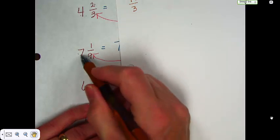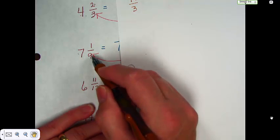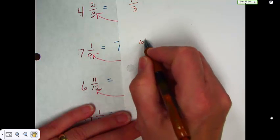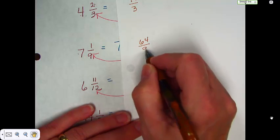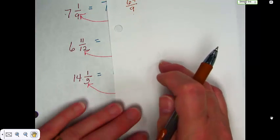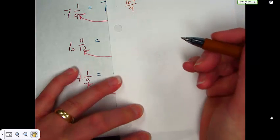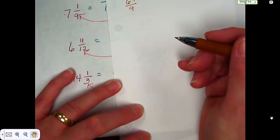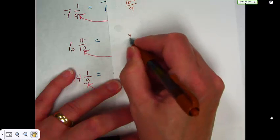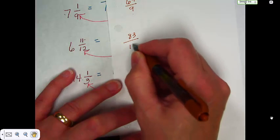7 times 9, which is 63, plus 1 is 64 over 9. 6 times 12, which I believe is 72, plus 11 is 83, over 12.